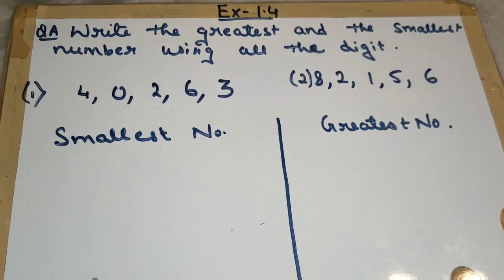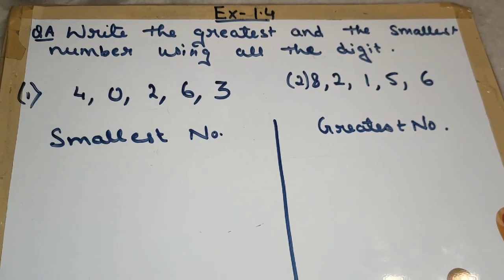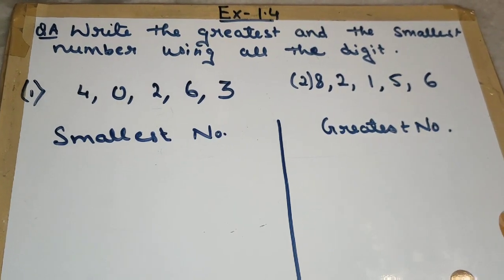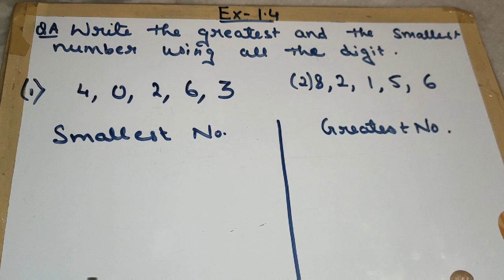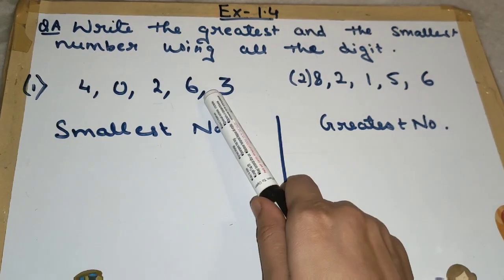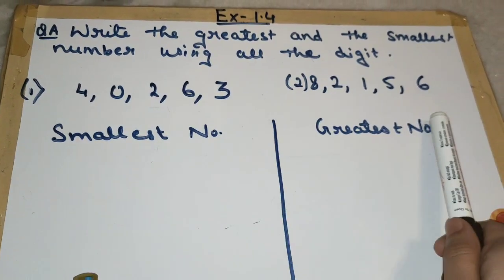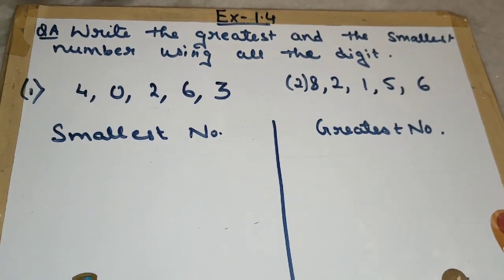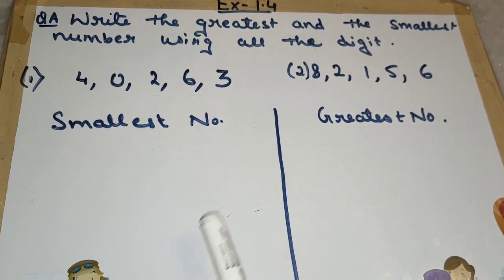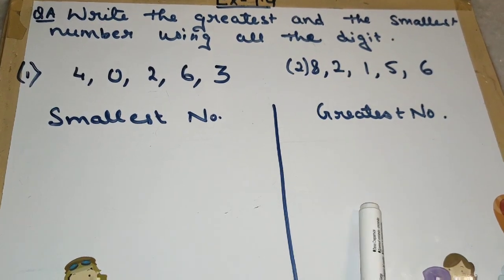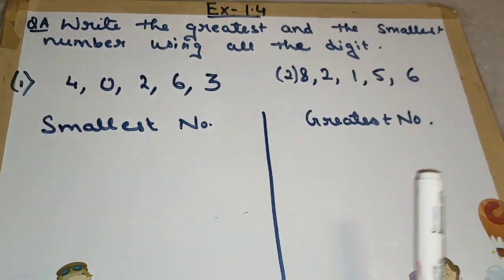Our next topic is: write the greatest and the smallest number using all the digits. Here are two questions. Now I will tell you how to make the smallest number and the greatest number.